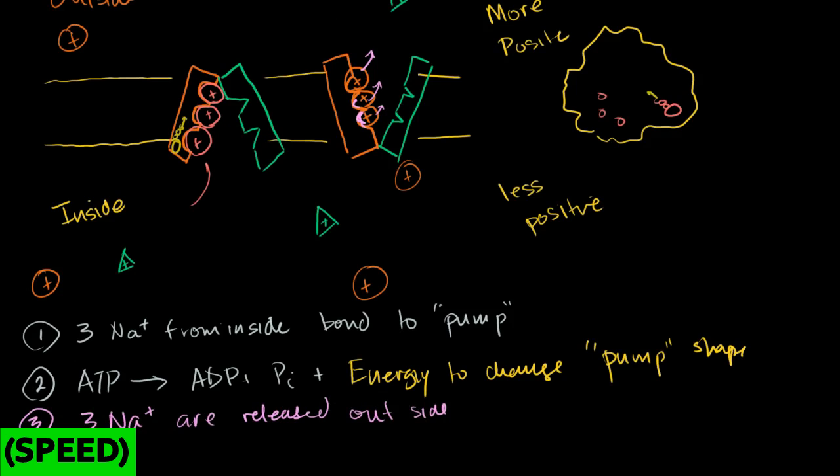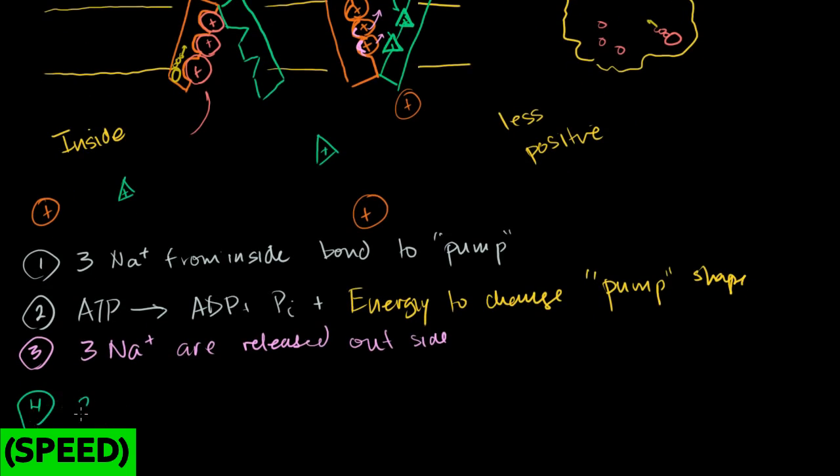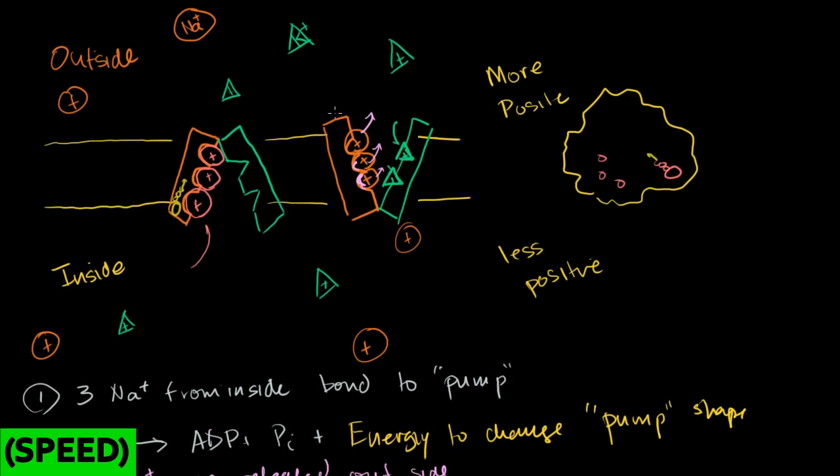Now once it's in this configuration, we have all these positive ions out here. These positive ions want to get as far away from each other as possible. The potassium can bond on this side of the protein when it's in this activated configuration. So now, step four, we have two sodium ions bond to the activated pump, or changed pump, or maybe we could say it's in its open form. They come here, and then when they bond there, it re-changes the shape of this protein back to this shape.